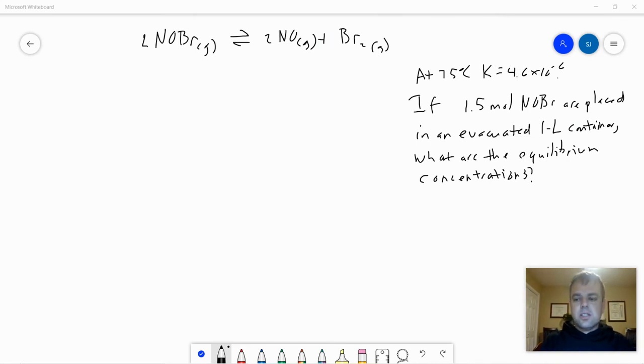But sometimes things aren't quite so simple, so let's look at what we need to do in that case. Now we're going to take a look at a problem that could be a lot more difficult to solve. We have this reaction, two NOBRs makes two nitrogen monoxides plus bromine. All of these in the form of a gas. And at 75 degrees Celsius, K equals 4.6 times 10 to the minus sixth. If one and a half moles of NOBR are placed in an evacuated one liter container, what are the equilibrium concentrations once equilibrium is established?